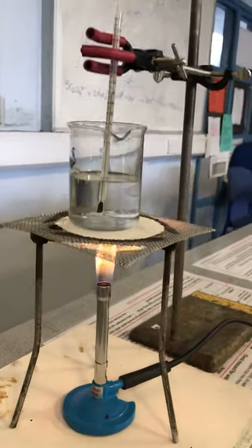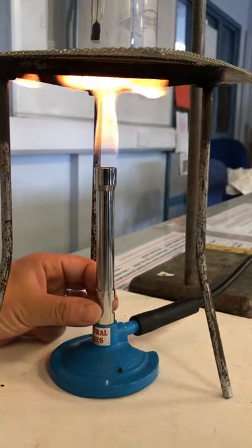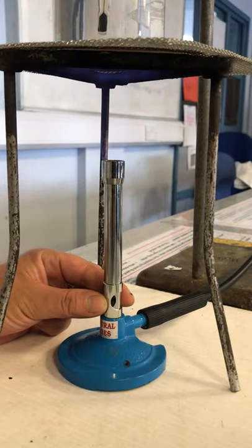Once you see the orange flame, which is also a safety flame, open the air hole of the Bunsen burner halfway by rotating the metal collar.